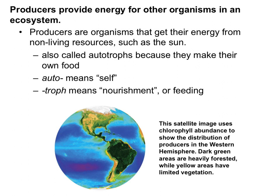Some terms you will need to know have to do with our food chain and how energy is passed through the food web. The first term is producers — these are organisms that get their energy from non-living resources, such as the sun. In other words, they produce their own food. They are also called autotrophs because they make their own food: auto means self and troph means nourishment or feeding, so they are self-feeding and do not need to eat something else.